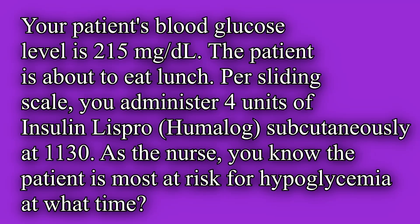Your patient's blood glucose level is 215 mg per deciliter. The patient is about to eat lunch. Per sliding scale, you administer 4 units of insulin Lispro, which is Humalog, subcutaneously at 1130. As the nurse, you know the patient is most at risk for hypoglycemia at what time?